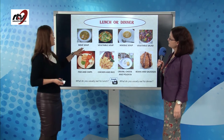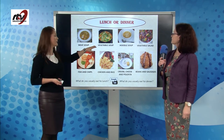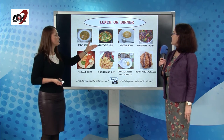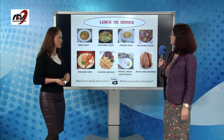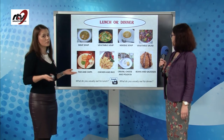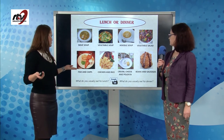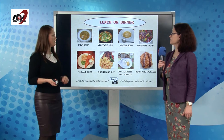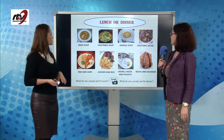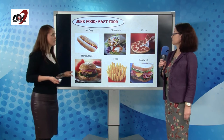For lunch and dinner, we usually eat soup. If it has meat in it, we call it meat soup. If it only has vegetables, we call it vegetable soup. If it has noodles, we call it noodle soup. We can also eat vegetable salad, but there are different types of salads. Fish and chips, chicken and rice, cream, cheese and polenta — which is one of my favorites. Beans and sausages — very British-like. What do you usually eat for lunch and for dinner?